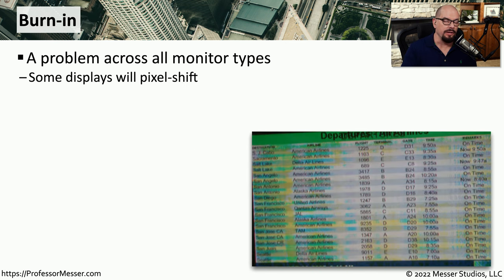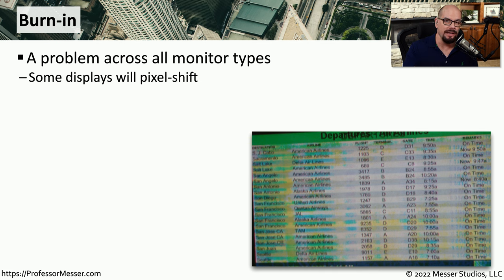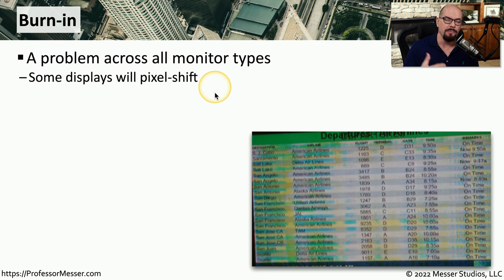A problem that can occur across all display types is the problem of burn in. This is when you have a single image on the screen that stays for a very long time, and stays for so long that when you remove that image, a portion or ghost of that image is left on the display. Some displays have a technology known as pixel shift built into the display to help prevent this. It will slightly move an image that is not changed after a certain amount of time by just a pixel or two in an effort to prevent this type of burn in.